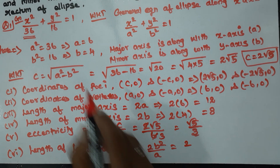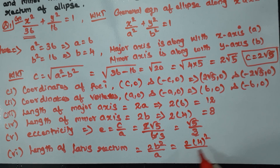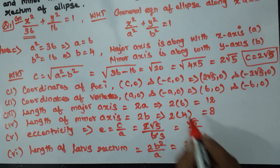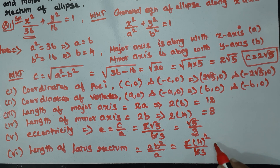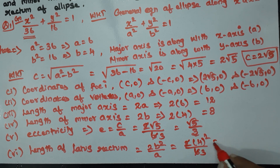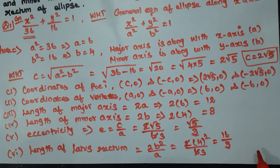Putting in values: 2 × b² / a = 2 × 4² / 6 = 2 × 16 / 6 = 16/3. So the length of latus rectum is 16/3.